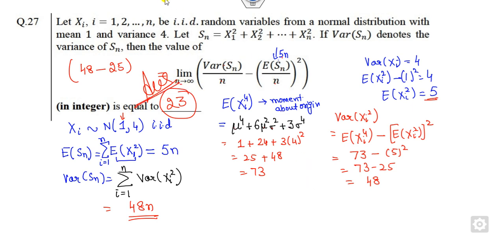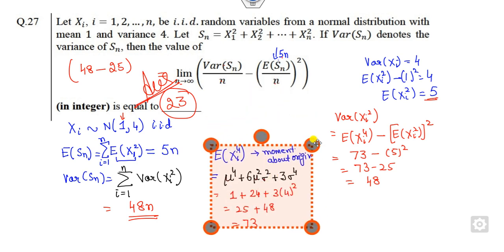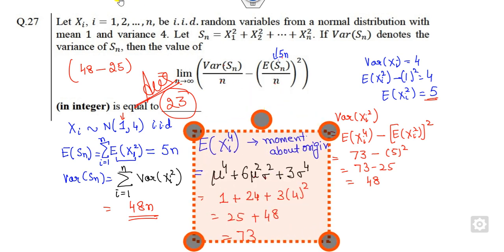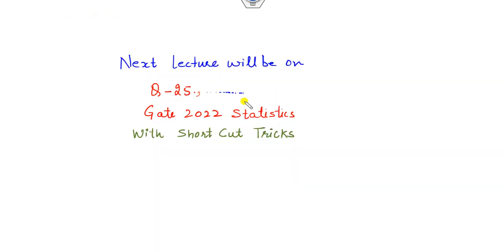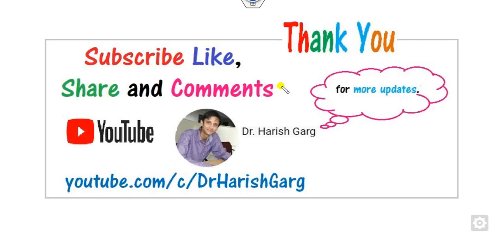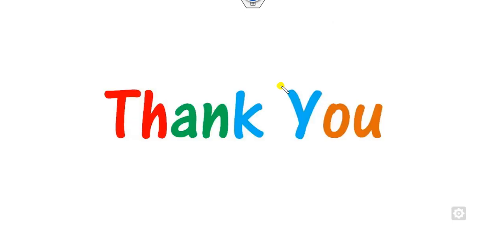That's a very simple shortcut trick for you. Just remember this formula, that is the shortcut trick for the expected values about the movement at power 4. We will see some other questions related to question number 28 onwards in our next lectures. Till then, you can simply like, share and comment on my channel. Best of luck students.